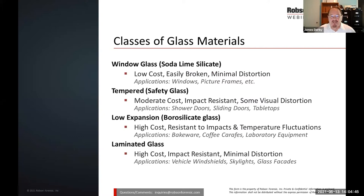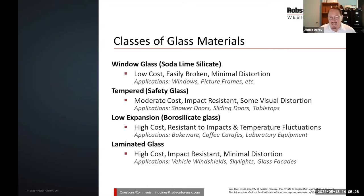Within the classes of glass materials, we have window glass — simple soda-lime silicate glass — which has a composition of approximately 72% SiO2, 13% sodium, and about 12% calcium. That is one of the lowest melting temperature compositions, allowing for the manufacturing of relatively low-cost window glass. It's fairly easily broken, but has minimum distortion. If that window glass is passed through a tempering furnace, it produces something called safety glass or tempered glass. The cost is moderate, it has higher strength — four times the strength of window glass — and it is impact resistant, though some visual distortion may be expected.